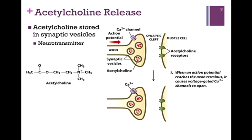Acetylcholine is a neurotransmitter. Its structure is illustrated on the left of the screen. It's not important to remember the structure of the molecule, only what the molecule does. It's stored in synaptic vesicles — in other words, it's encased in a lipid bilayer, a lipid sac, at the end of the nerve axon.